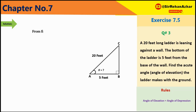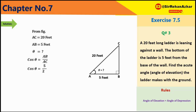Data: AC = 20 feet, AB = 5 feet, theta = unknown। AB theta के respect base है और AC, 90 degree के opposite side है इसलिए hypotenuse है। Base/hypotenuse = cosine। Cos of theta = AB/AC = 5/20।